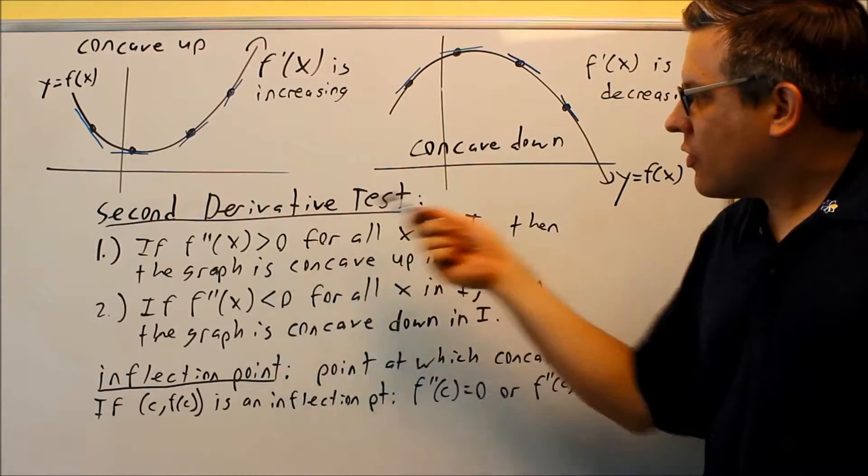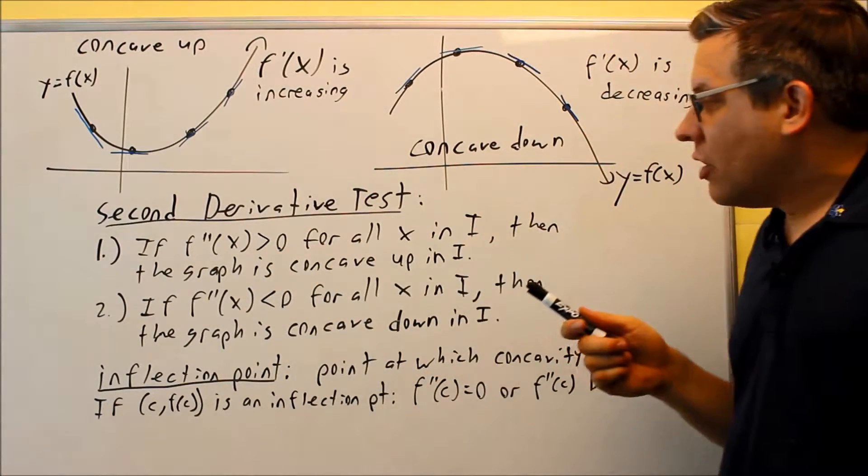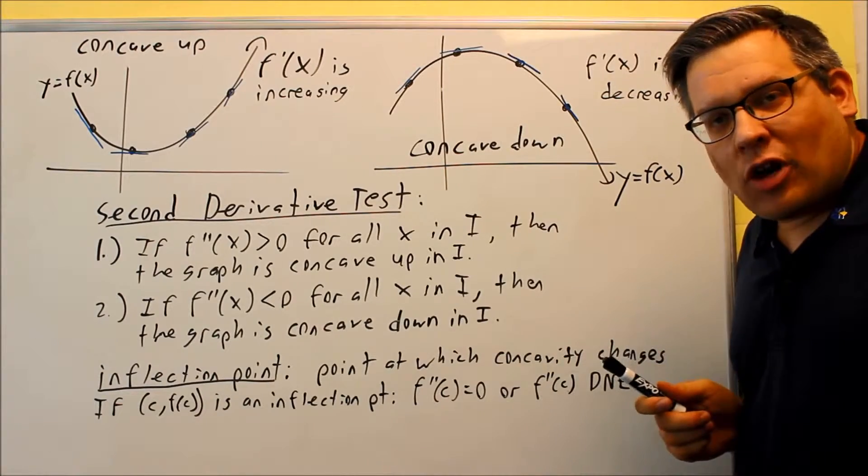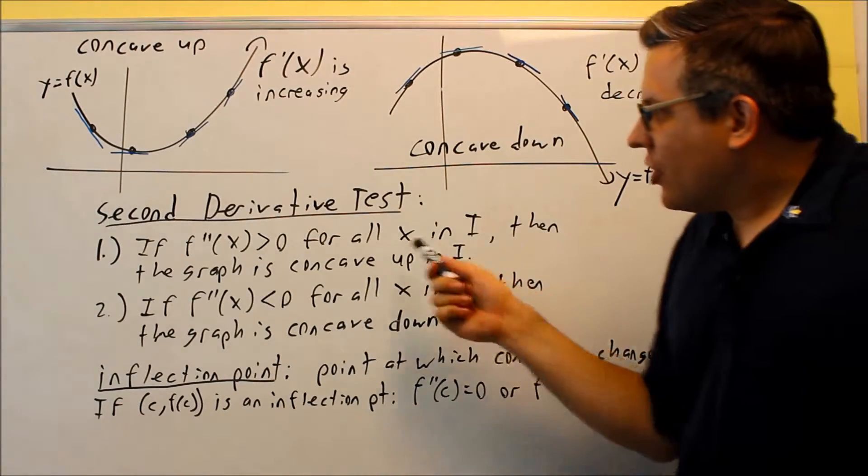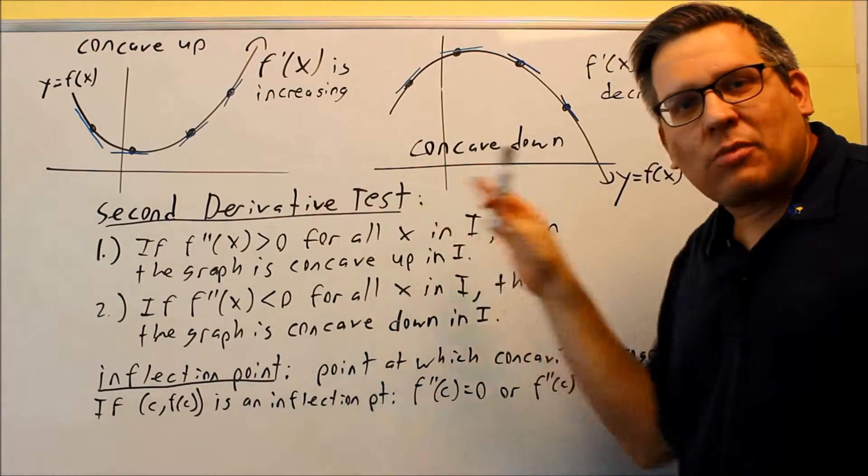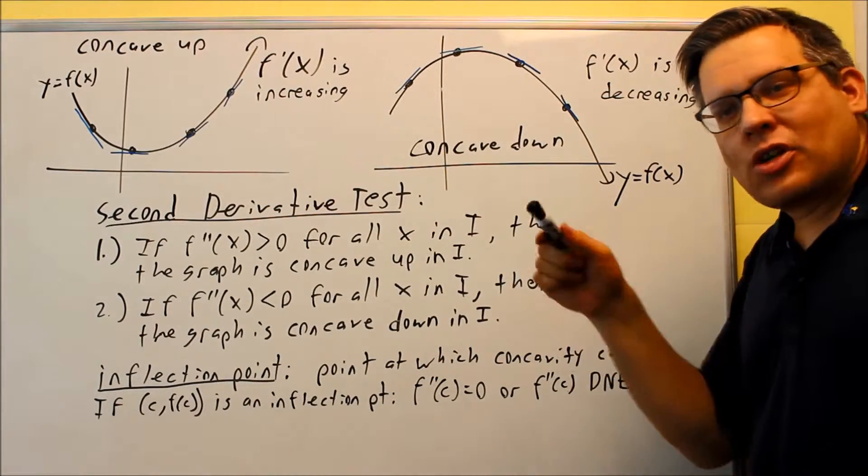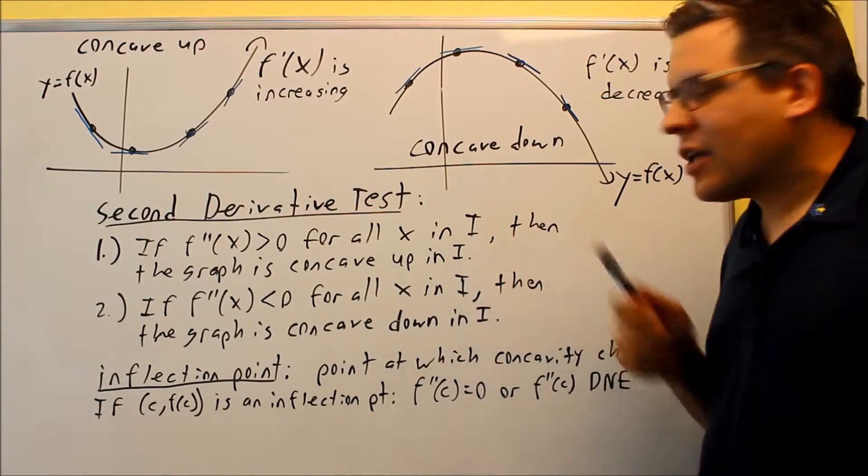So the second derivative test says that if the second derivative is greater than zero then we say that it's going to be concave up. So this is the way you can do it algebraically without drawing a graph. You're going to take the second derivative, you're going to do the same sign chart that you did for the first derivative and wherever you see a plus sign that means it's going to be concave up.